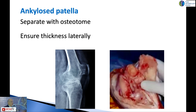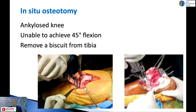What do you do if you've got an ankylosed knee? When the patella is ankylosed, you need to separate it with an osteotome. Be careful not to make the patella too thin — make sure you're keeping it thick. For an in-situ osteotomy of the tibiofemoral joint, use your tibial jig to identify the joint line. If you're not sure from the bony landmarks, use a C-arm, put in K-wires, use your tibial jig, and take out a biscuit from the tibia. This again gives you some working room.